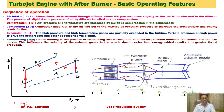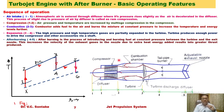After burning (process 4 to 5) takes place in the tailpipe afterburner. After burning is the process of introducing and burning fuel at constant pressure between the turbine and the exit nozzle. This increases the velocity of the exhaust gases in the nozzle due to the extra heat energy added, resulting in greater thrust.